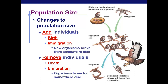Some countries are growing in population, like India or the United States, because there's more birth and immigration than death and emigration. Other countries have a relatively stable population, like Japan — that means birth and immigration roughly balance death and emigration. As for the Earth as a whole, there's no immigration or emigration, so birth and death rates determine the planet's growth. Right now we have a lot more birth than death, so the population is growing.